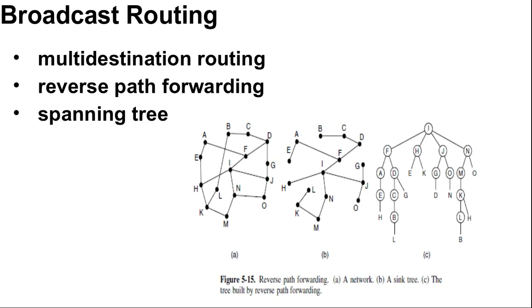The principal advantage of reverse path forwarding is that it is efficient while being easy to implement. It sends the broadcast packet over each link only once in each direction, just as in flooding, yet it requires only that routers know how to reach all destinations without needing to remember sequence numbers or list all destinations in the packet.